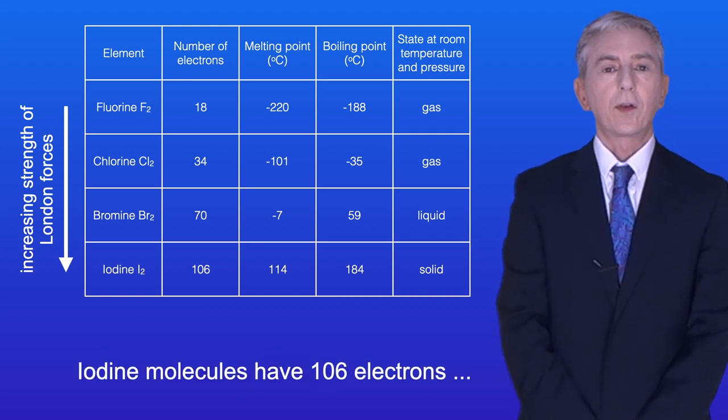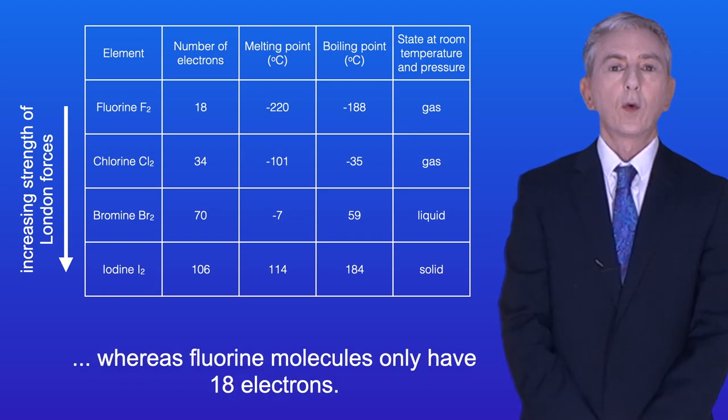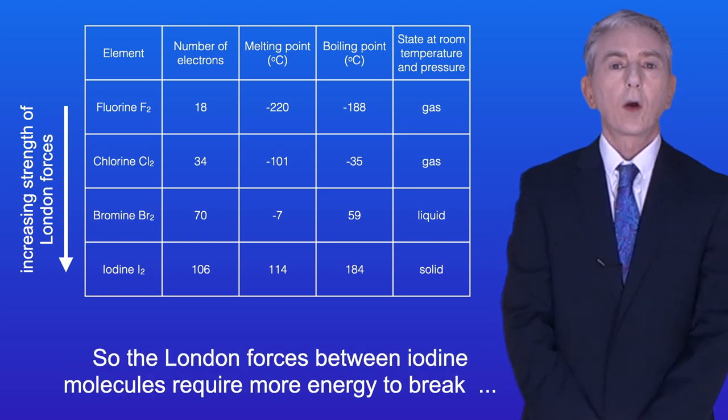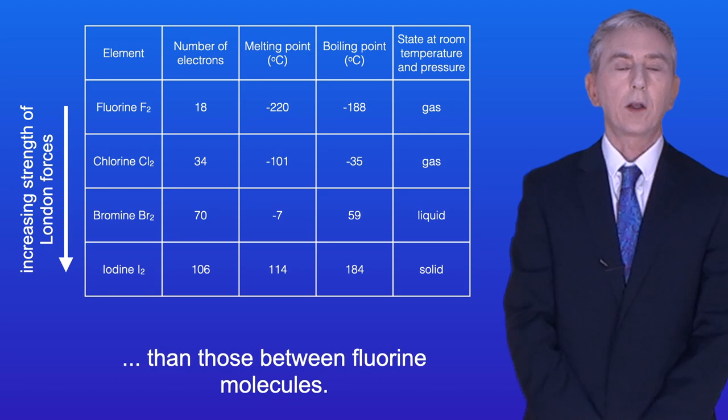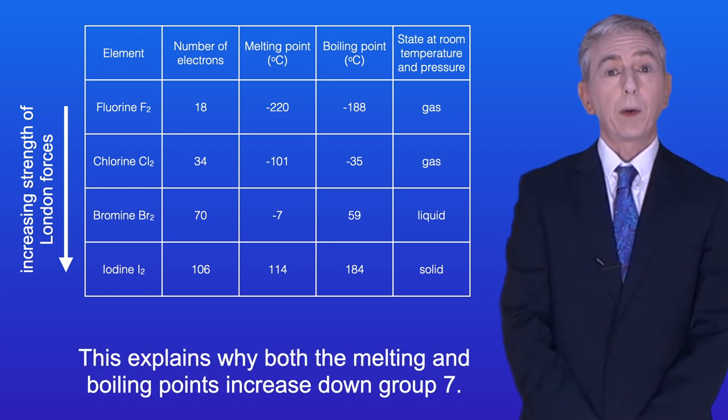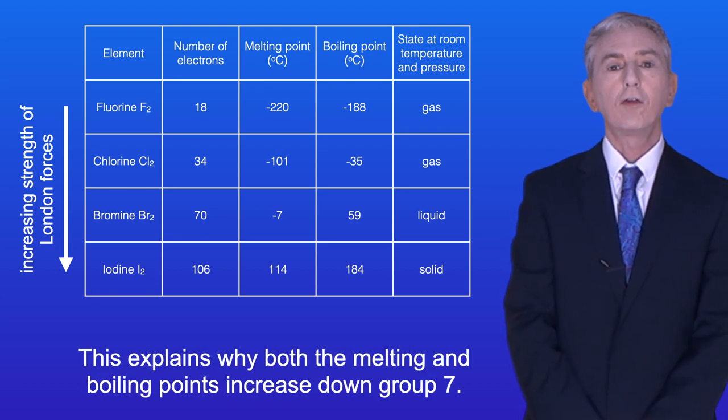Iodine molecules have 106 electrons, whereas fluorine molecules only have 18 electrons. So the London forces between iodine molecules require more energy to break than those between fluorine molecules, and this explains why both the melting and boiling points increase down Group 7.